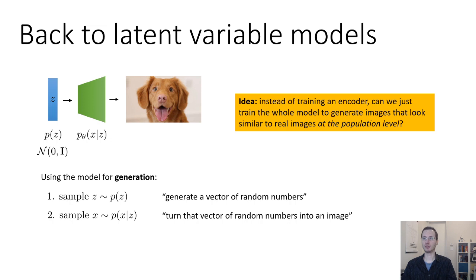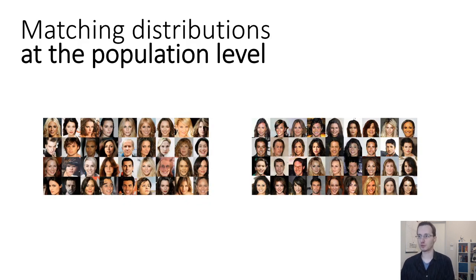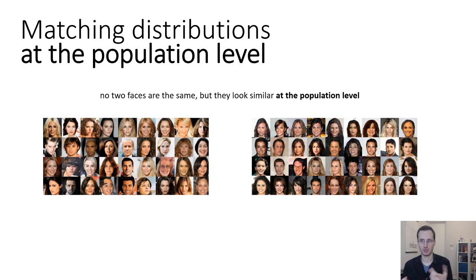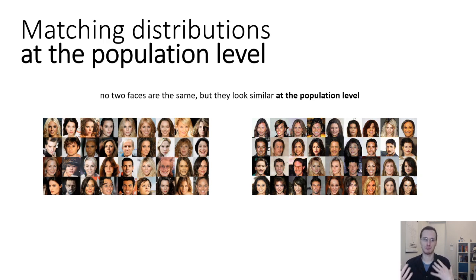This might seem a little abstract so let's use an example. Say I have two sets of faces — both collections of faces not paired with each other, just two different distributions over faces. No two faces are the same but they look similar at the population level. If you took five samples from one distribution and five from the other, you might not be able to tell which distribution they came from. In that case we'd say the two distributions are similar at the population level. This is how we can match distributions without figuring out what the latent variables for any particular image actually are.